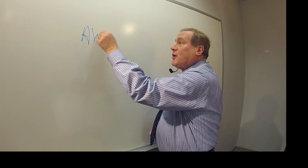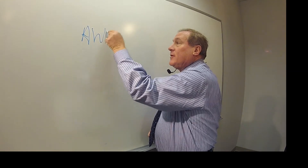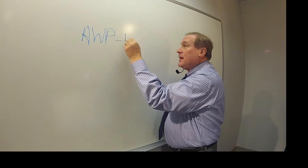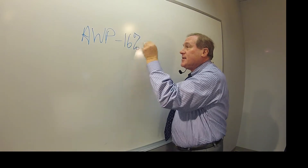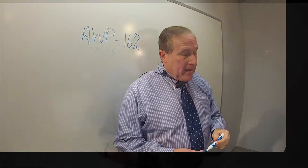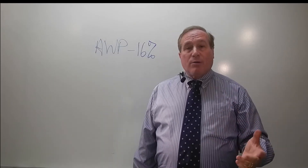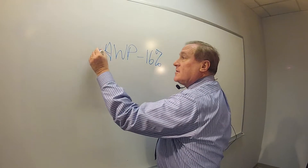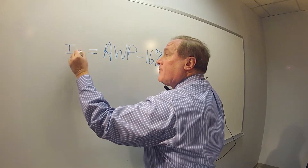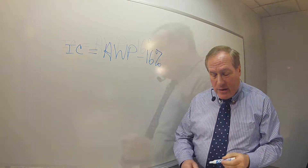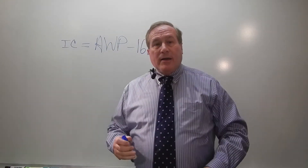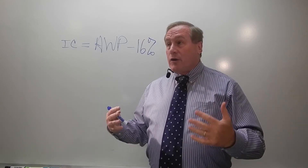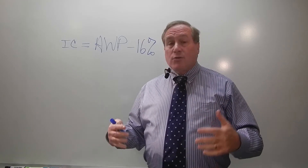AWP, or average wholesale price, is usually discounted by some number — it can be anything, but effectively let's say 16%. You pay that average wholesale price minus 16%, and that equals the ingredient cost. Now the problem is that as long as the average wholesale price is a real number, your ingredient cost works really well.